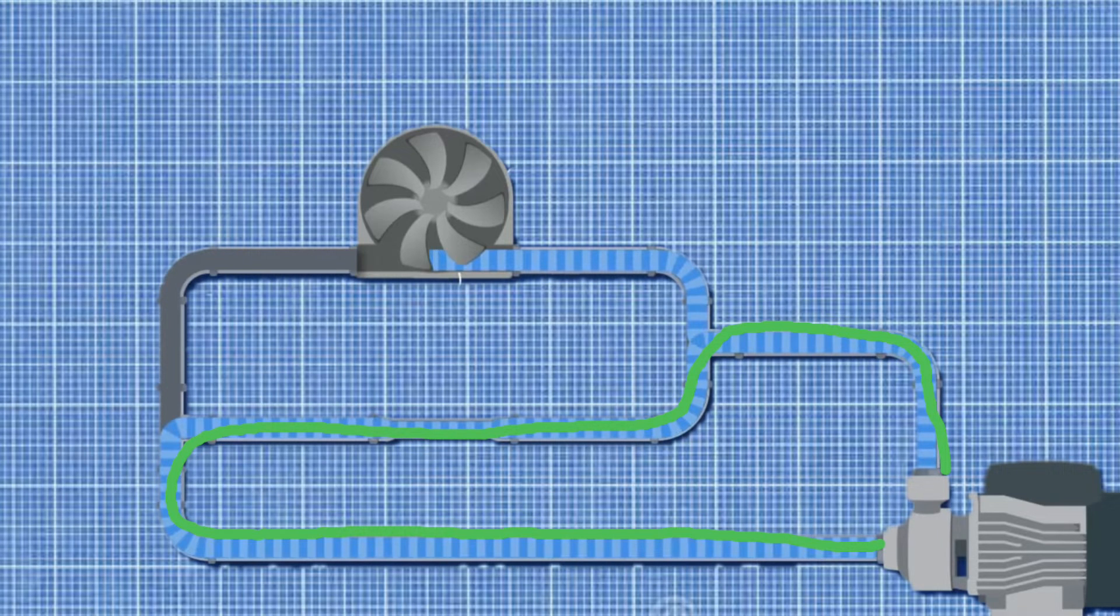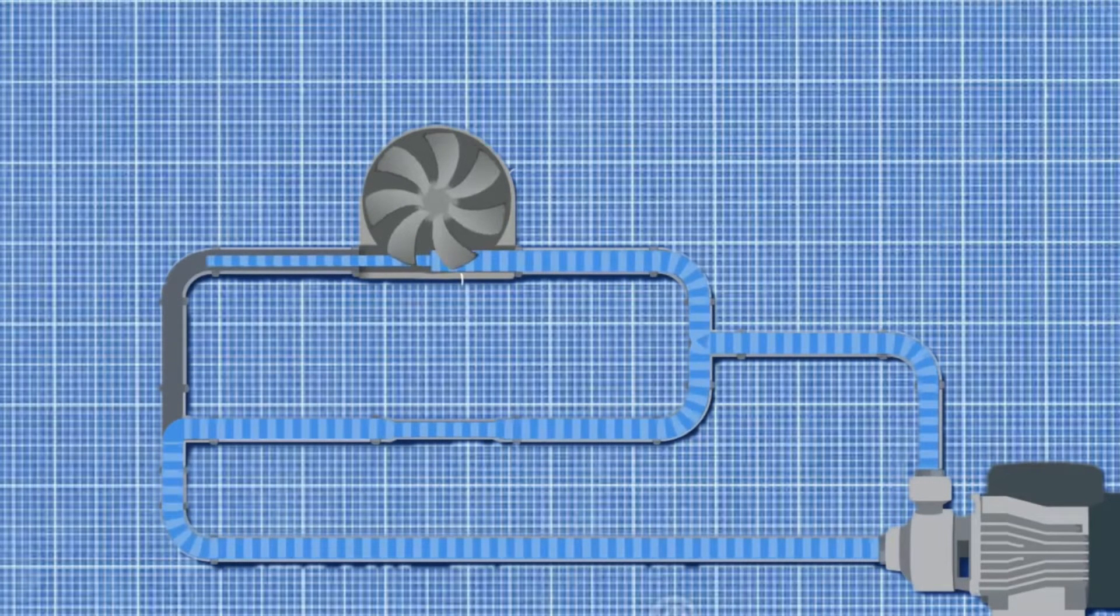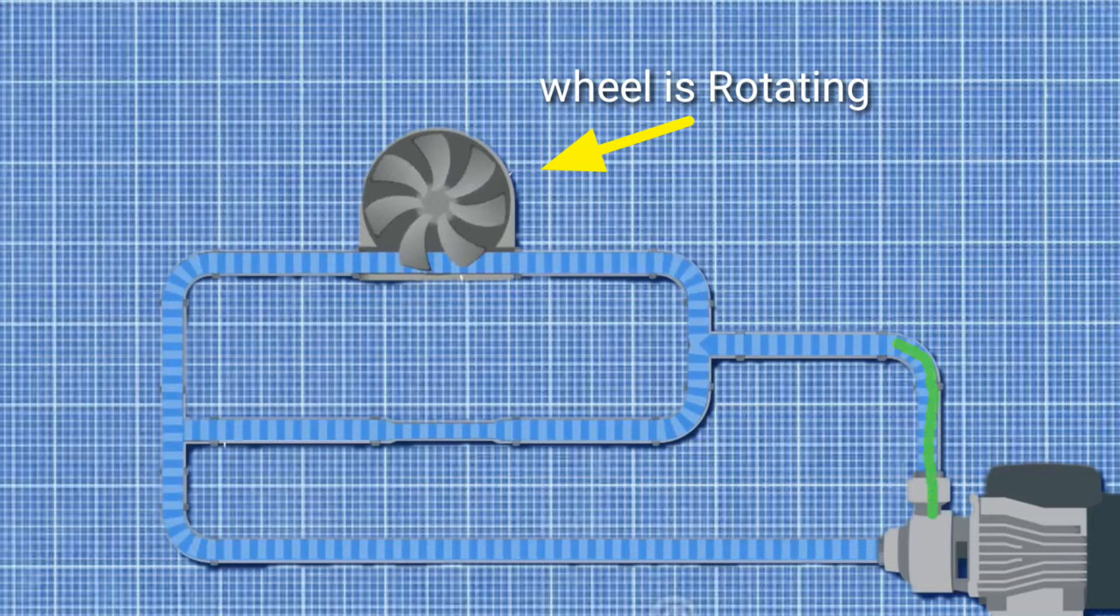After some time, the water wheel rotates and reaches the maximum speed. Water will stop flowing through the reducer path and continue flowing through the water wheel and get back to the pump.